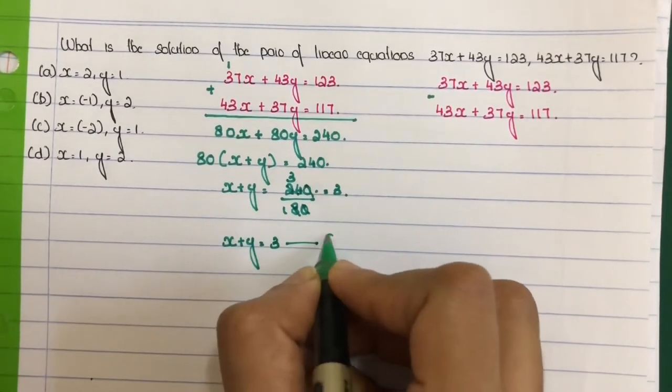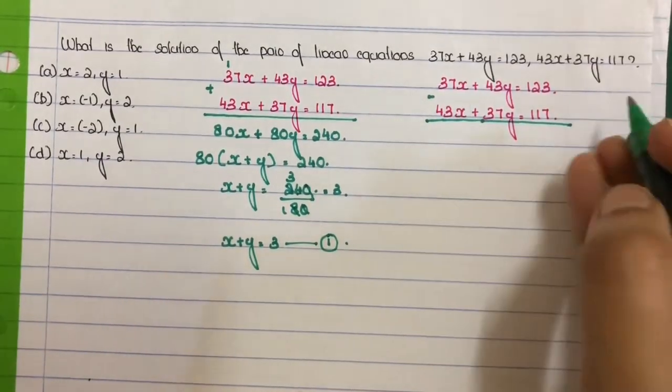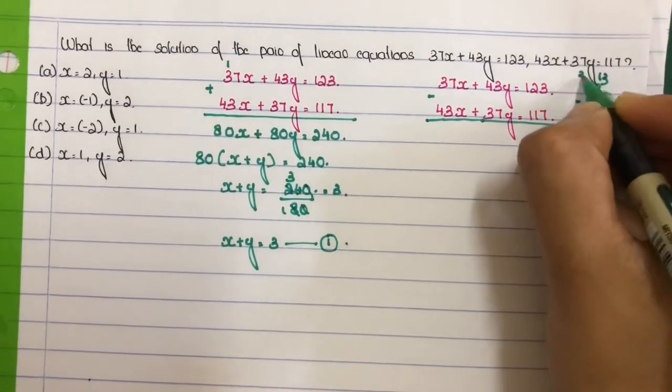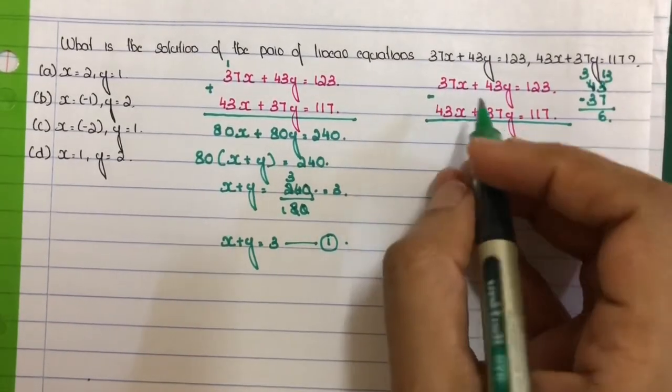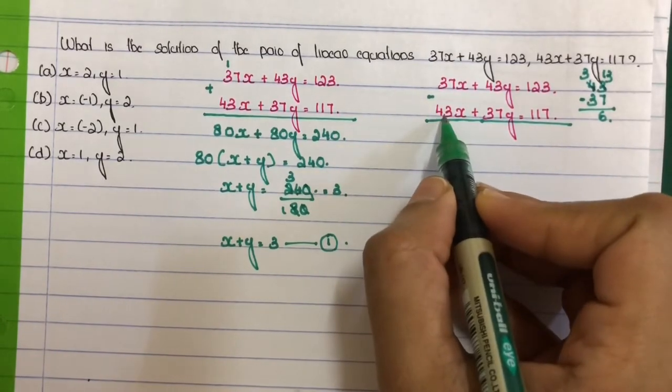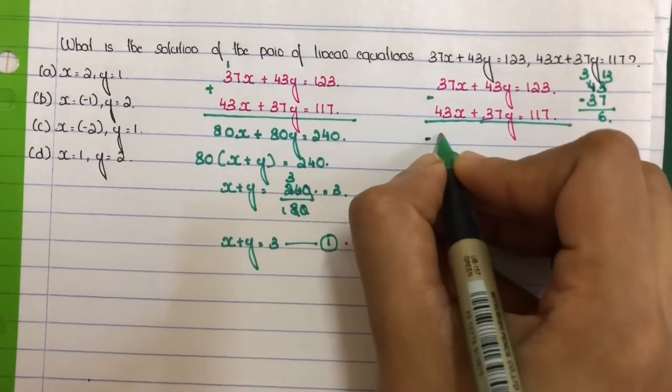Mark it as equation number 1. Next step, subtract. 37 minus 43: In this case, it's 37 minus 43. The negative is equal to the bigger number, so the answer is minus 6x.